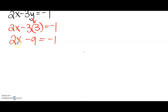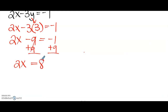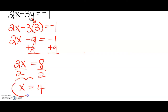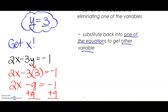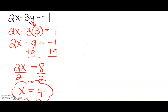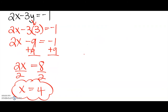Bring our 2X down. Then we're going to use inverse operations to isolate X and solve for X. Negative 1 plus 9 is going to give us 8, and then divide by 2. So we're going to get that X equals 4. That's the other coordinate for our ordered pair.